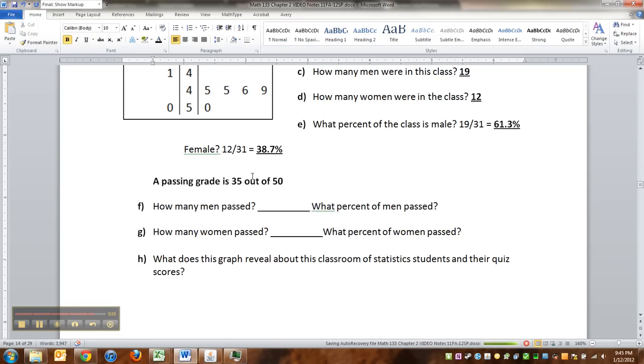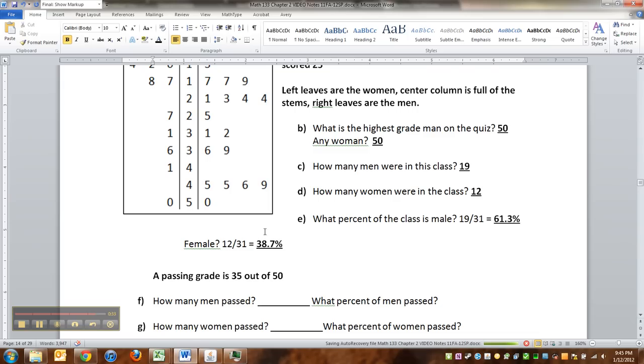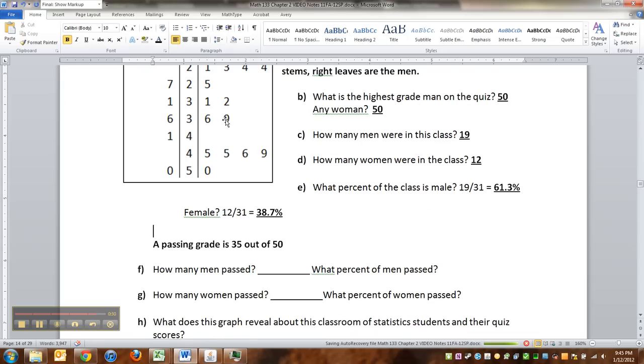All right. If a passing grade was 35 out of 50, how many men passed? How many got higher than 35? 1, 2, 3, 4, 5, 6, 7 of them.